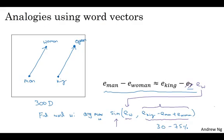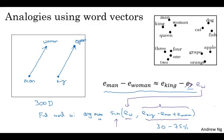Before moving on, I just want to clarify what this plot on the left is. So previously we talked about using algorithms like t-SNE to visualize words. What t-SNE does is it takes 300D data and it maps it in a very nonlinear way to a 2D space. And so the mapping that t-SNE learns, this is a very complicated and very nonlinear mapping. So after the t-SNE mapping, you should not expect these types of parallelogram relationships like the one we saw on the left to hold true. And it's really in this original 300-dimensional space that you could more reliably count on these types of parallelogram relationships in analogy pairs to hold true. And it may hold true after mapping through t-SNE, but in most cases, because of t-SNE's nonlinear mapping, you should not count on that. And many of the parallelogram analogy relationships will be broken by t-SNE.